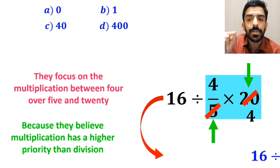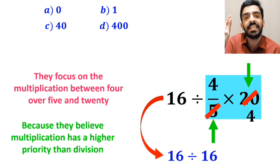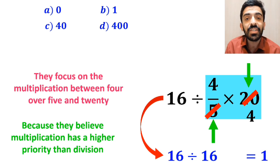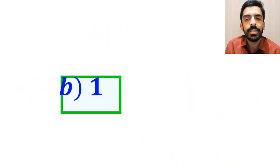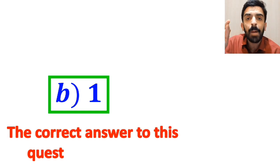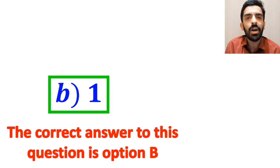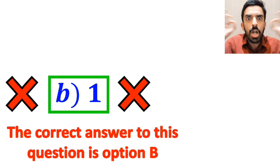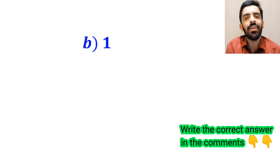And this expression simplifies to 16 divided by 16, which finally gives them the answer 1. And immediately they conclude that the correct answer to this question is option B. However, this answer is absolutely wrong.